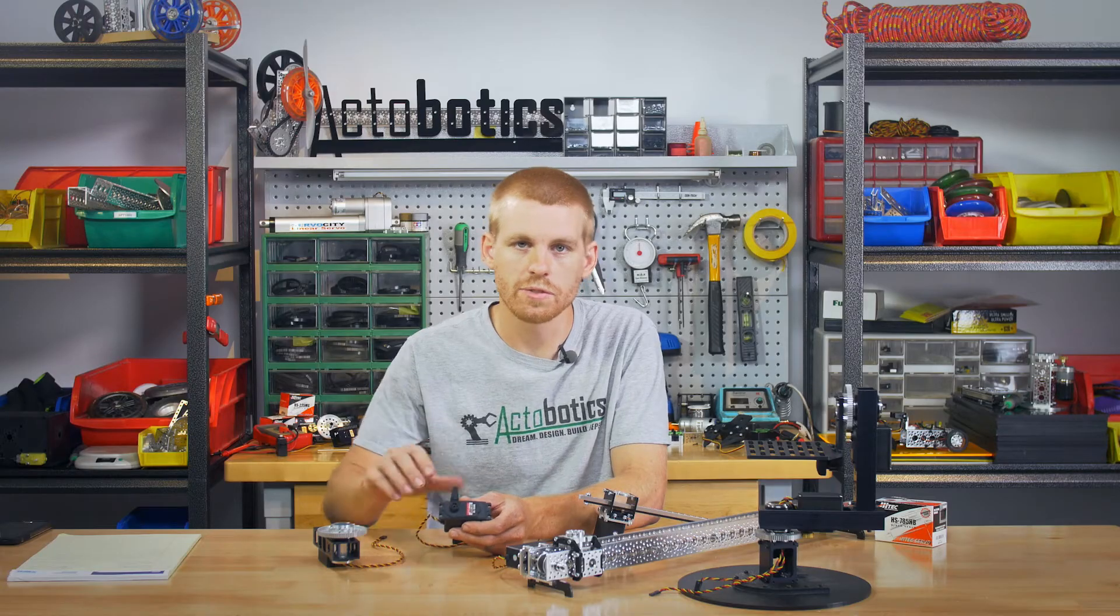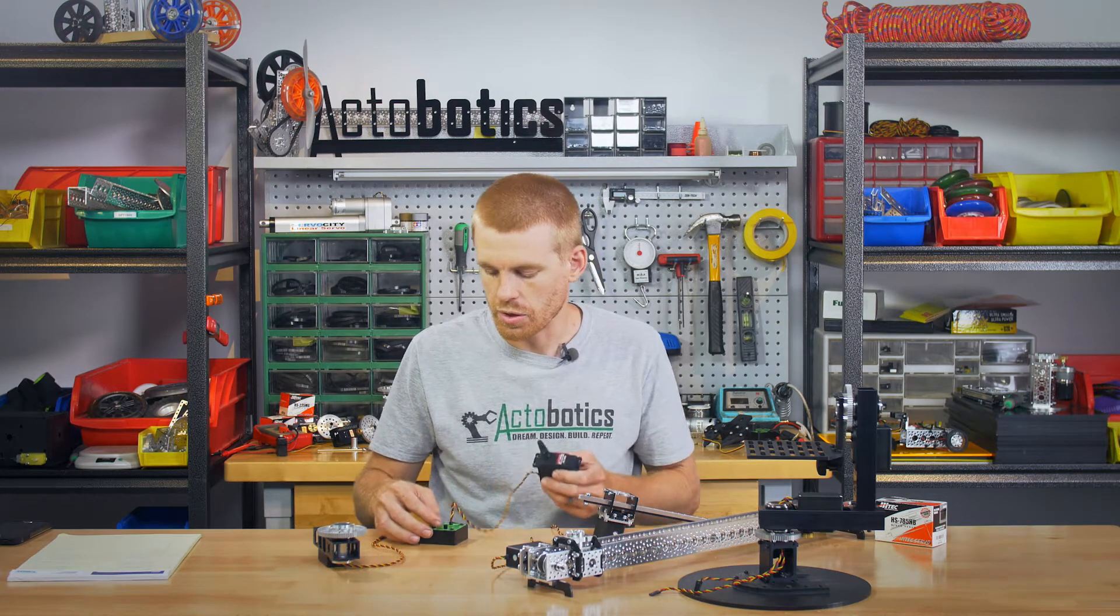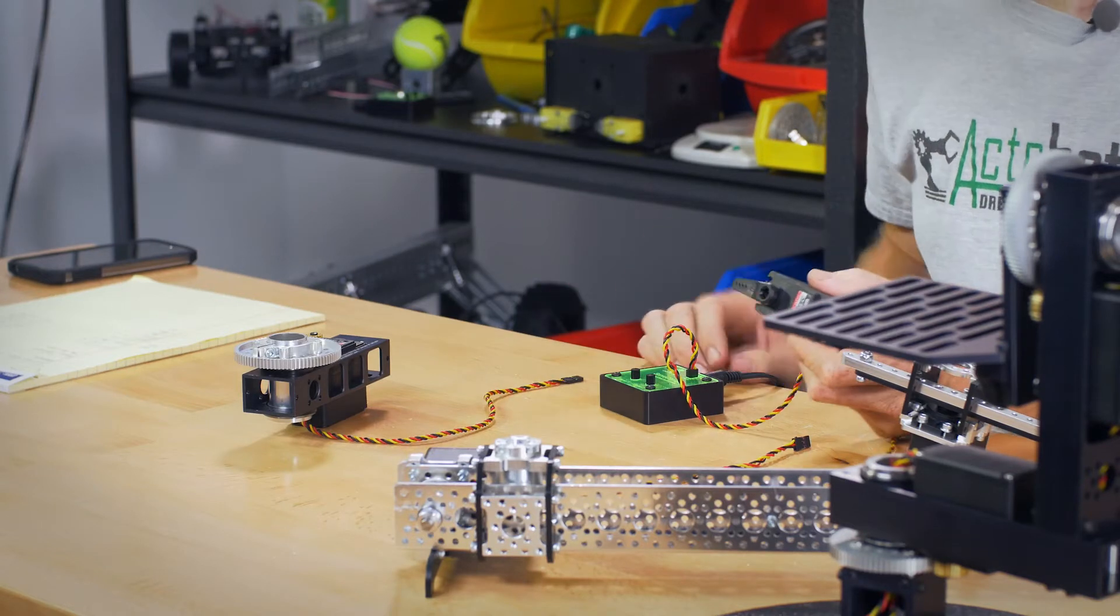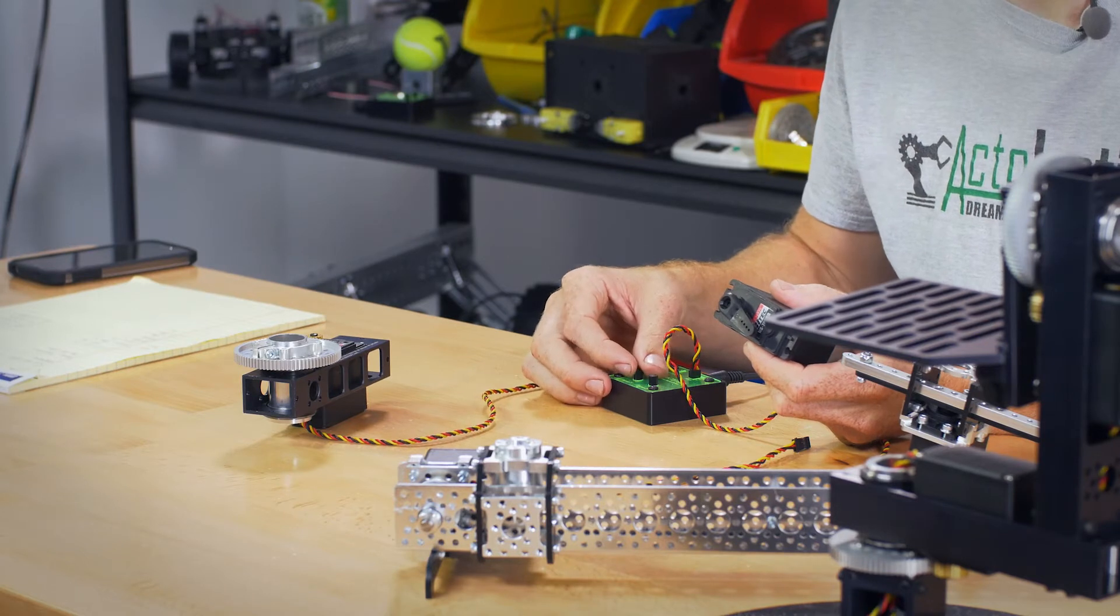So on this, when it receives a PWM signal, basically it's going to go to that corresponding position. So if I rotate the knob to a specific position on the dual servo driver, the servo is going to find that point and stop when it gets there.